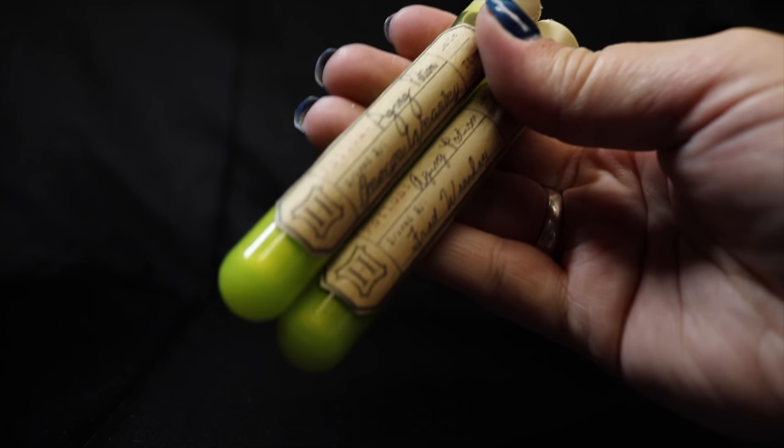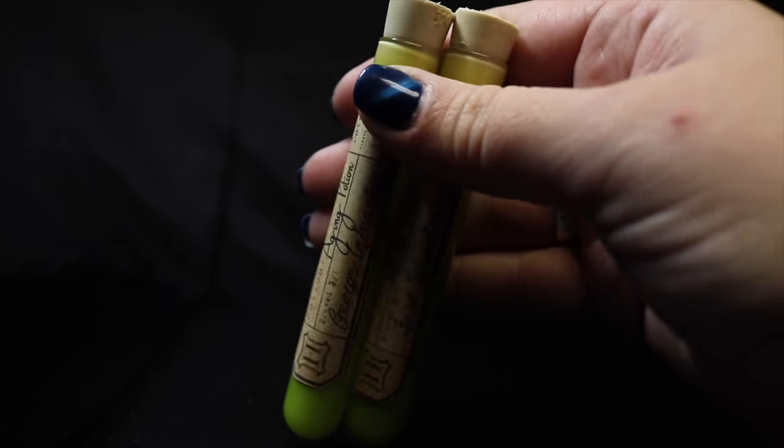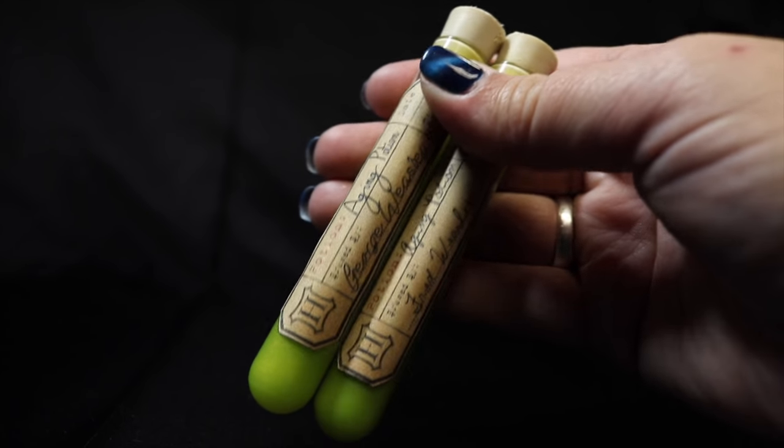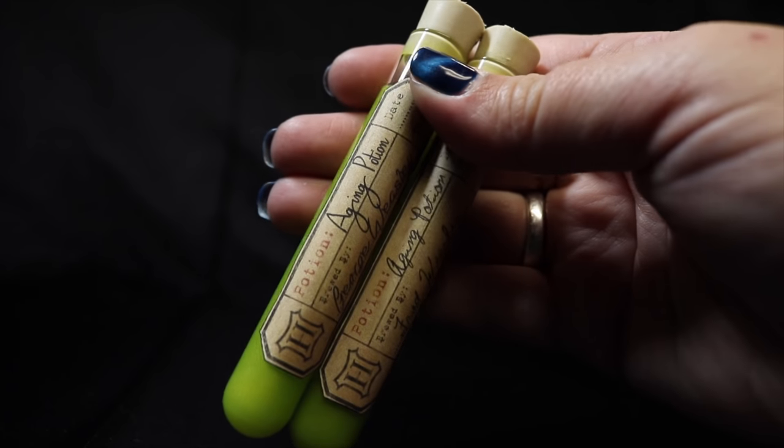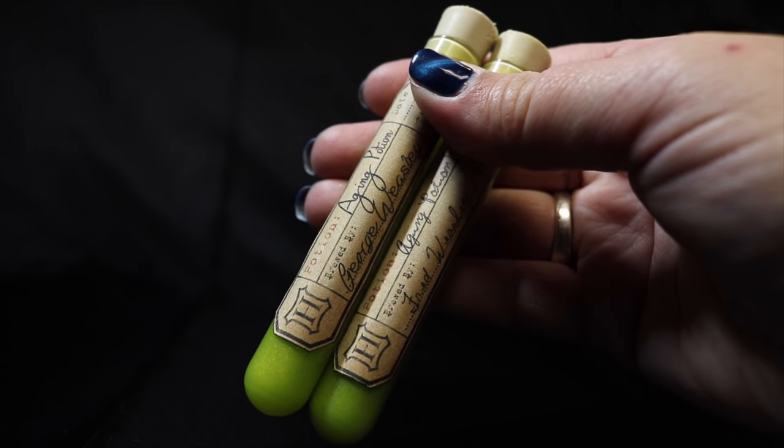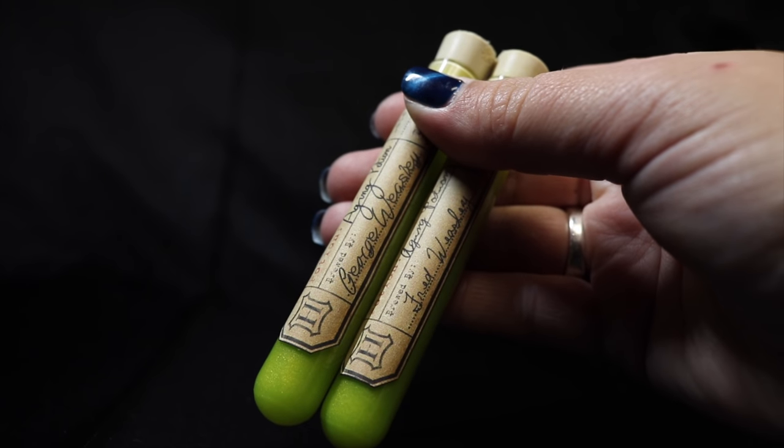And there you have it. Our Fred and George Weasley aging potion prop. This will make a great addition to our potion prop collection we've been making or just something fun to have around while watching the Goblet of Fire. If you like this video give me the thumbs up. If you haven't subscribed please do so and we will catch you guys later. Thanks so much!